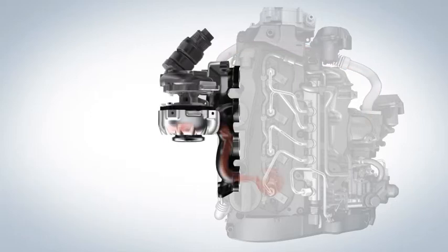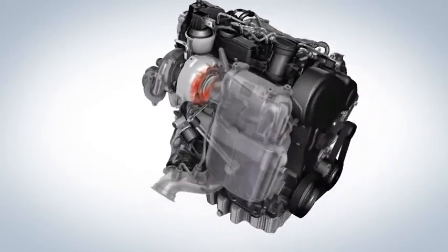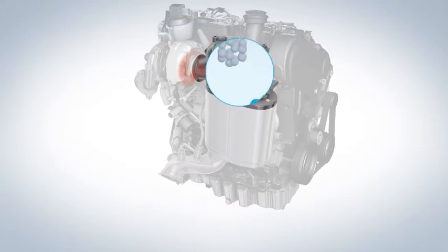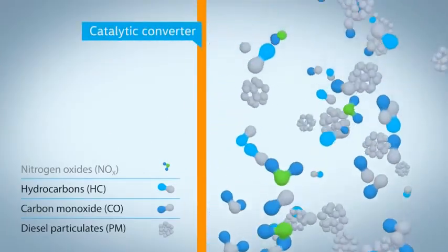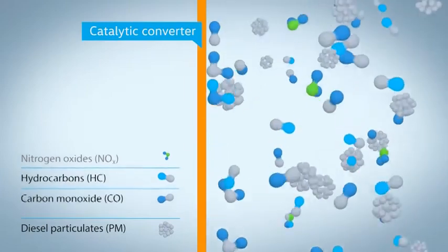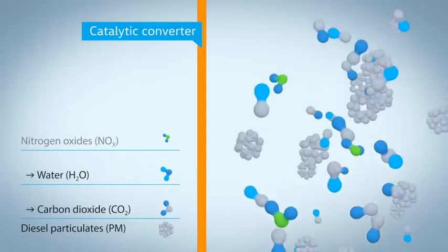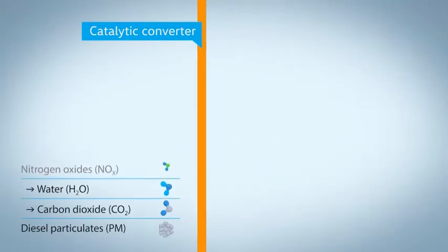After the exhaust gas has left the combustion chamber, it drives the turbocharger and moves on to the exhaust gas after-treatment. In this compact unit, the exhaust gas encounters the oxidation catalytic converter. This converts the carbon monoxide and hydrocarbons left over after the combustion process. The products? CO2 and water.